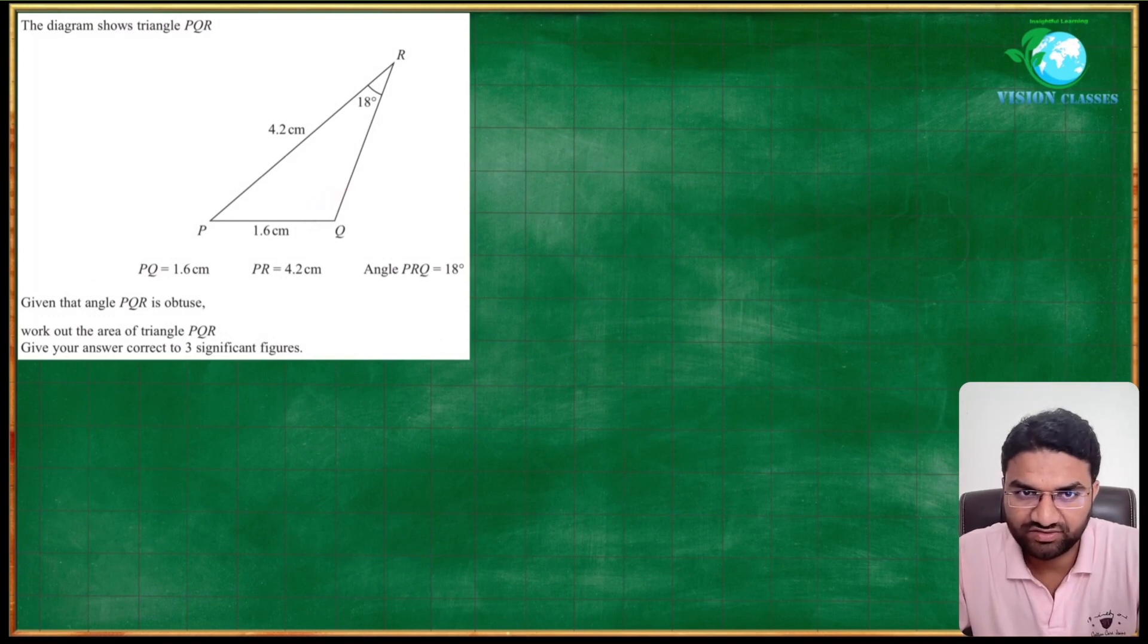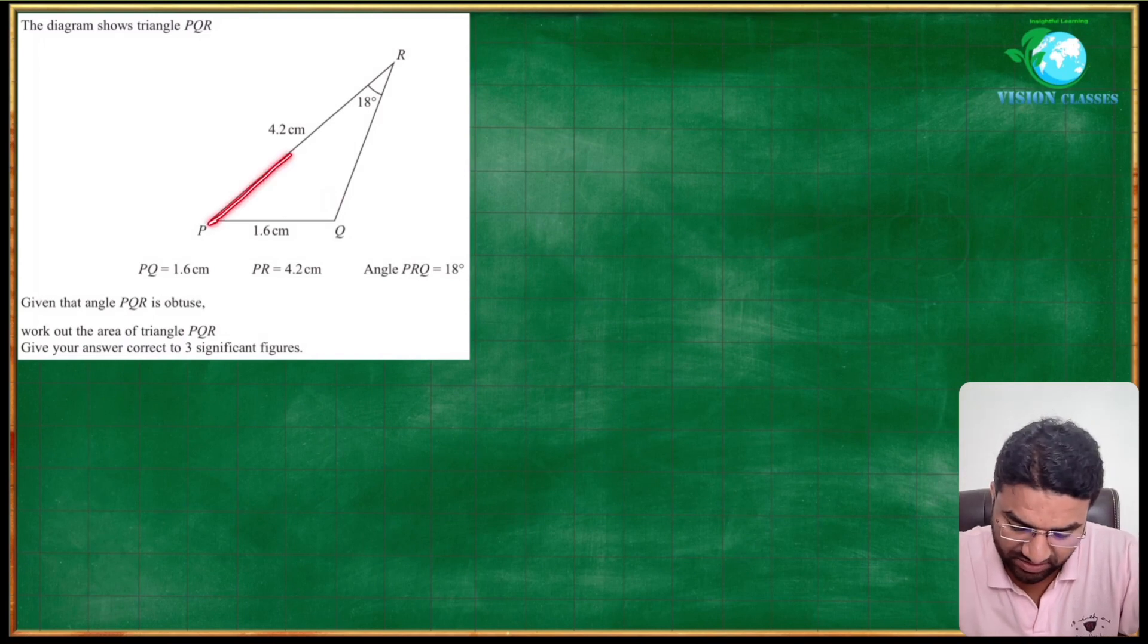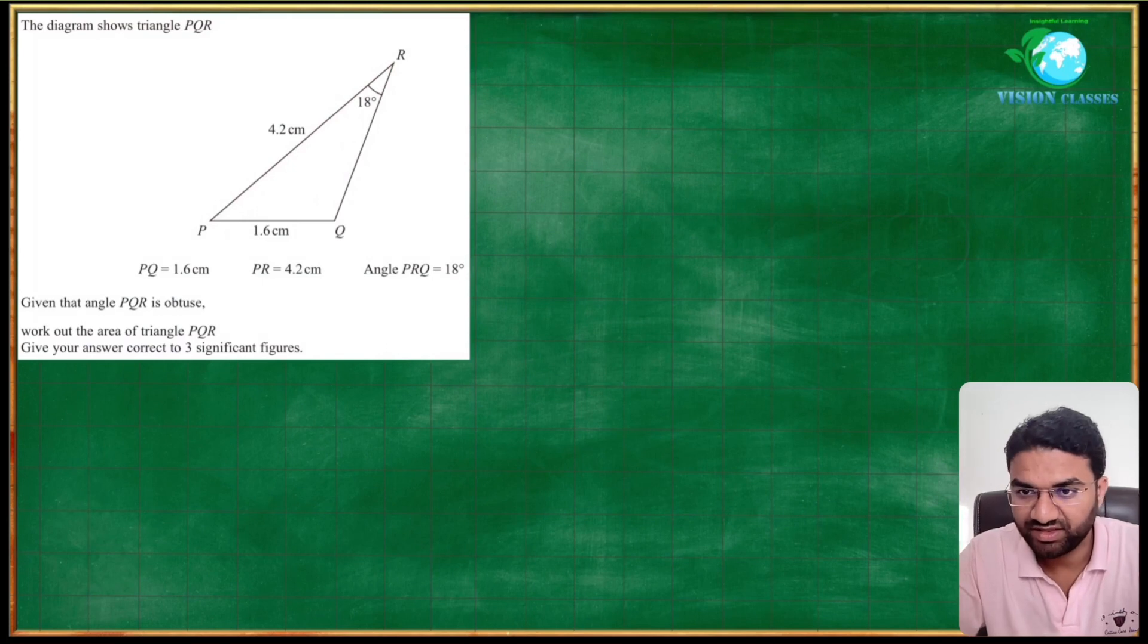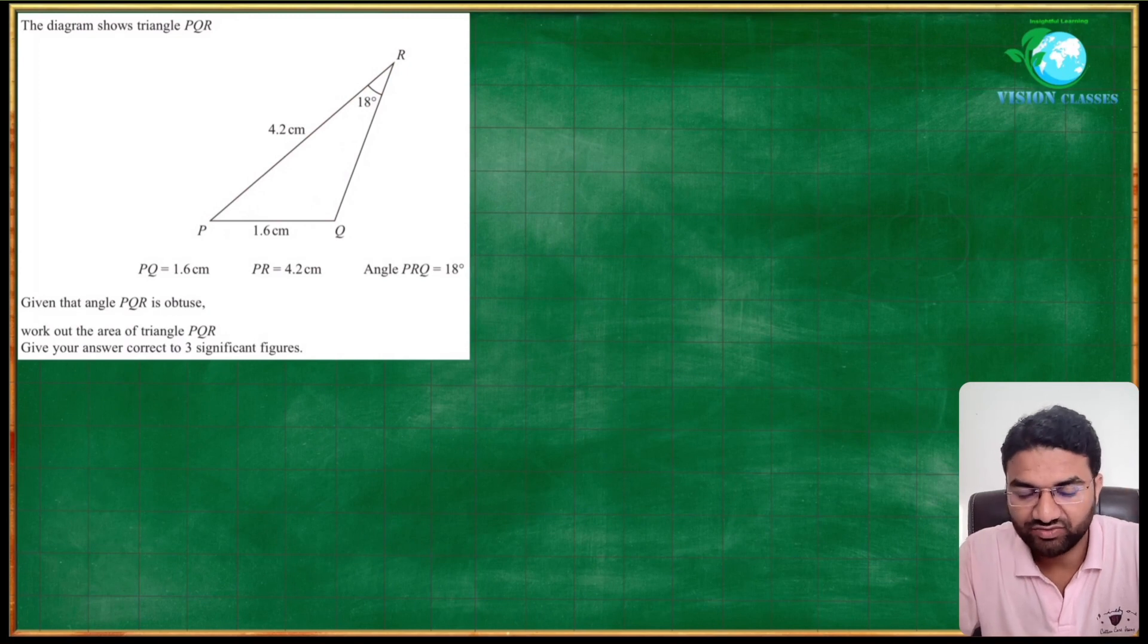If you look at this triangle PQR, this is a scalene triangle - all the sides are different. None of the angles is 90 degrees. If it would have been 90 degrees, then we could use the simple formula half times base times height.